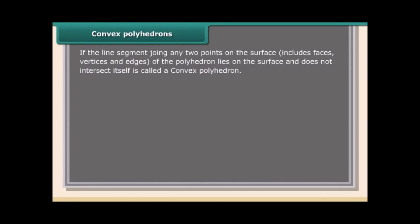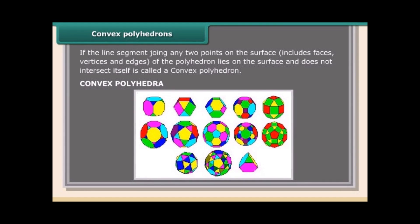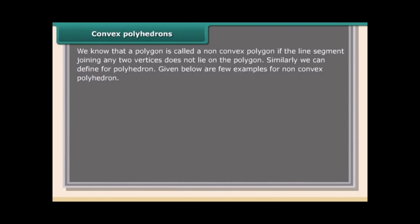Convex polyhedrons: If the line segment joining any two points on the surface — including faces, vertices, and edges — lies on the surface and does not intersect itself, it is called a convex polyhedron. A polyhedron is called non-convex if the line segment joining any two vertices does not lie on the polygon.